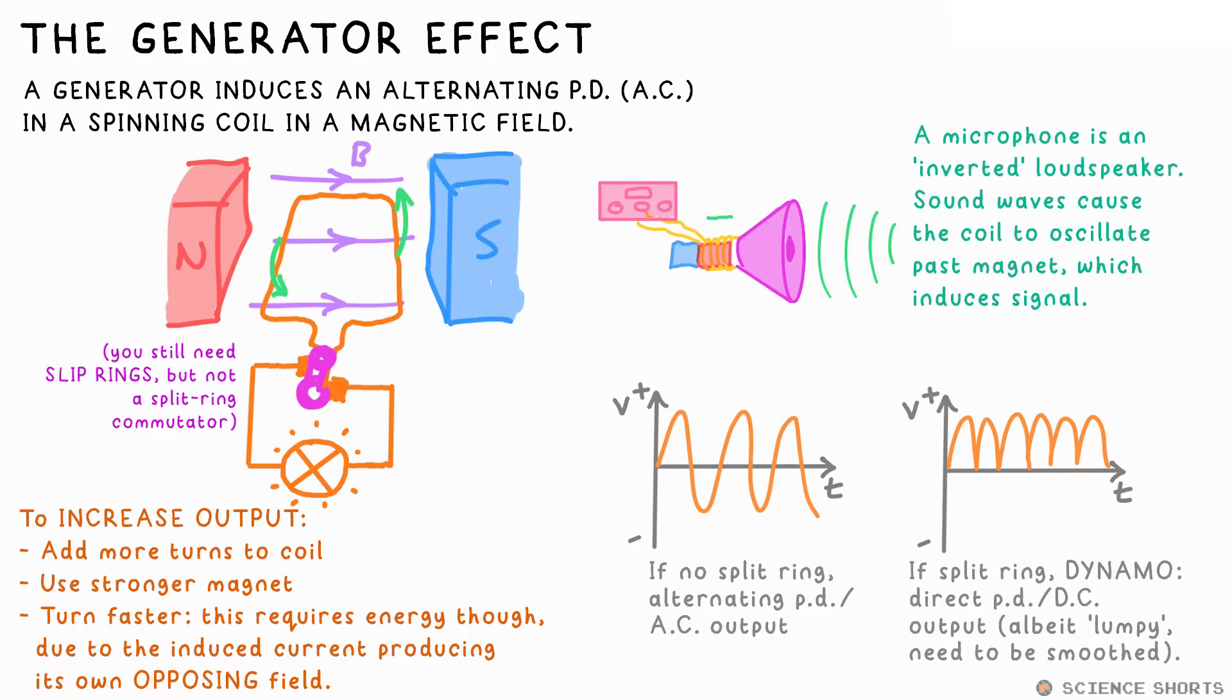Similar to a loudspeaker being a back and forth motor, a microphone is a back and forth generator. Sound waves move the diaphragm back and forth, which is attached to a coil that moves back and forth around a magnet, and then this induces a potential in the coil. That signal then travels through the wires to the phone, recorder, or whatever.